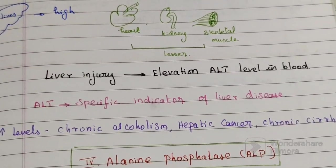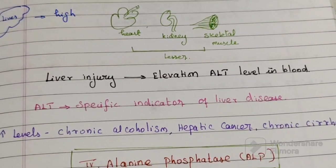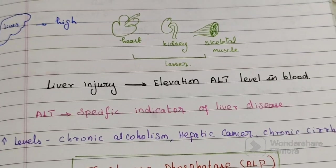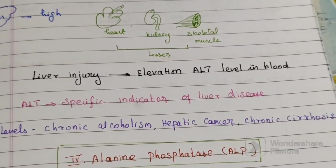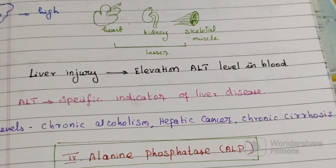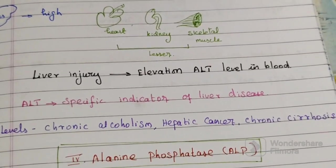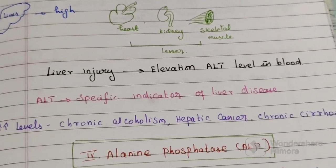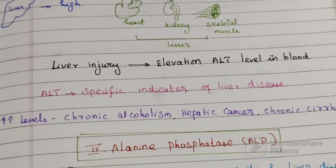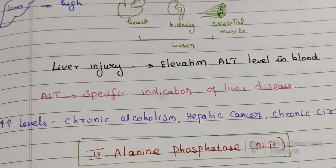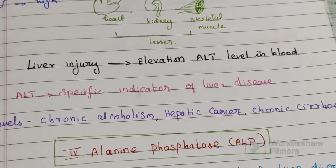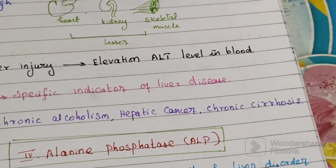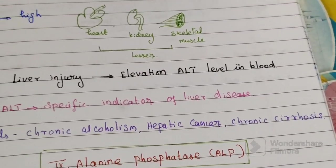A rise in ALT level can be seen in conditions such as chronic alcoholism, hepatic cancer, and chronic cirrhosis.